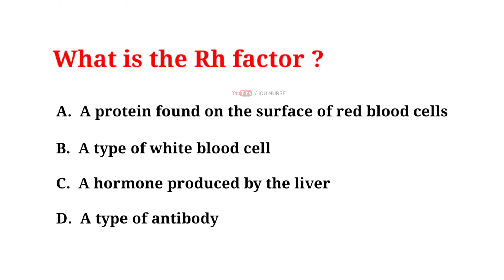What is the Rh factor? A. A protein found on the surface of red blood cells. B. A type of white blood cells. C. A hormone produced by the liver. D. A type of antibody. And the correct answer is A: a protein found on the surface of red blood cells.